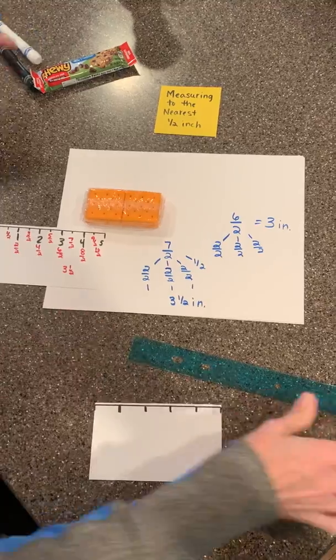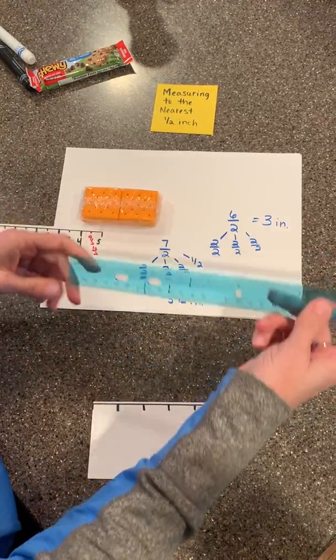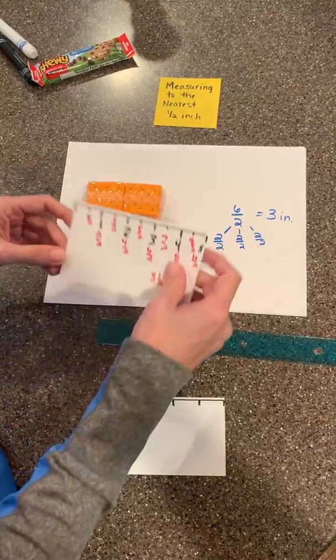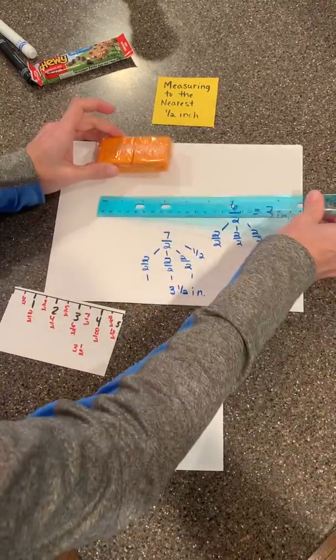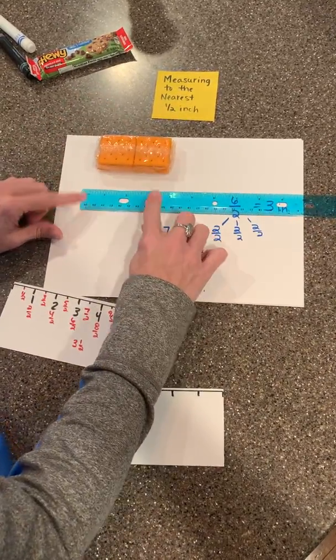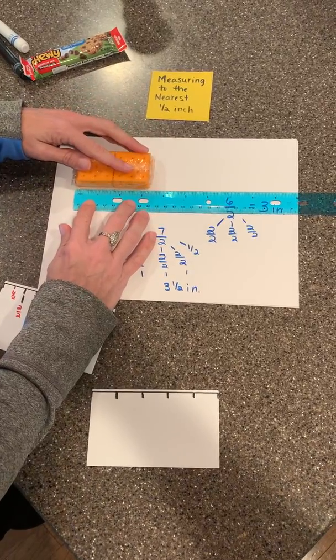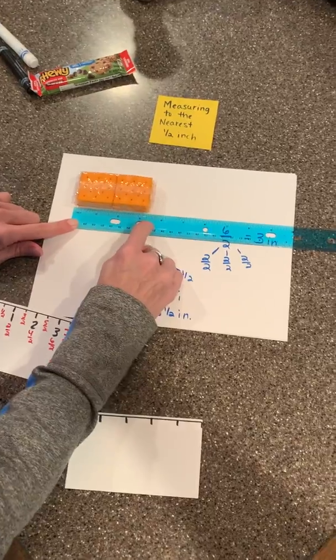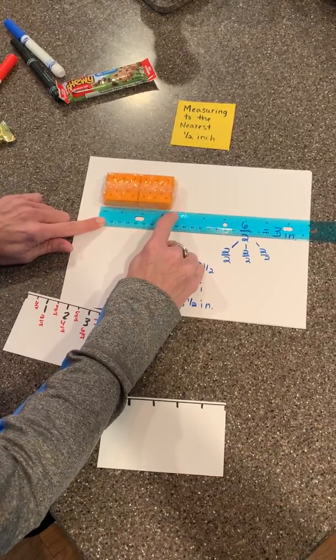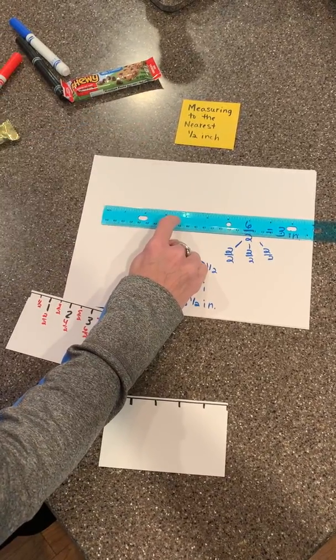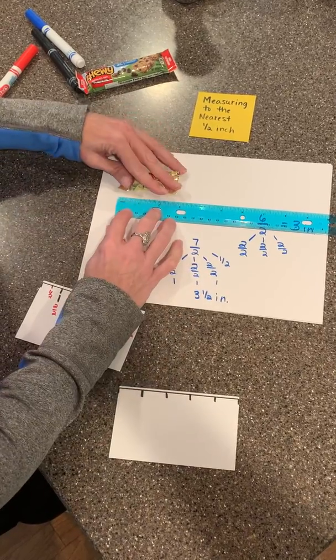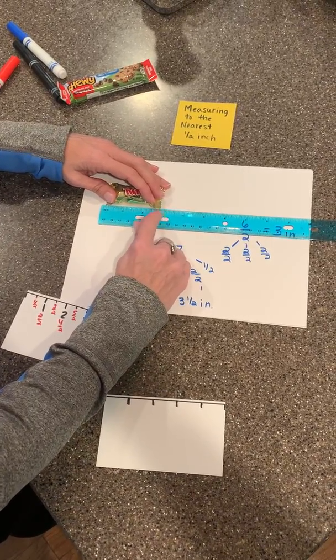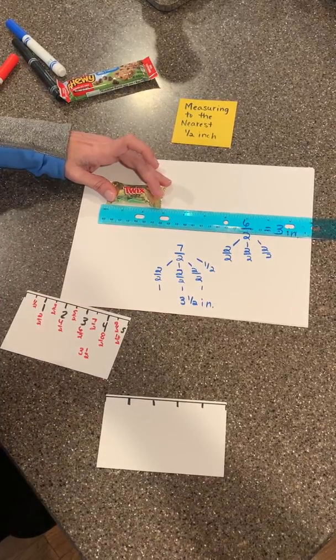So when you begin to work with your ruler, it might be helpful to first start off with something where it only shows the halves, and then begin moving into having a real ruler, where you have to really focus in, and remember, you're focusing in on the wholes, and then the halfway mark. So you can see that that stops right at three and a half. And then when we did the Twix, we could see that it's kind of between two and a half and three, but closer to three, so I would say that's three inches.